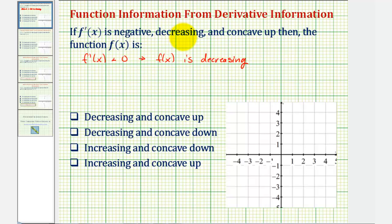And the second derivative indicates the concavity of the function, where if the second derivative is positive, the function is concave up. But in our case, because the second derivative is negative, this indicates the function f of x is concave down.